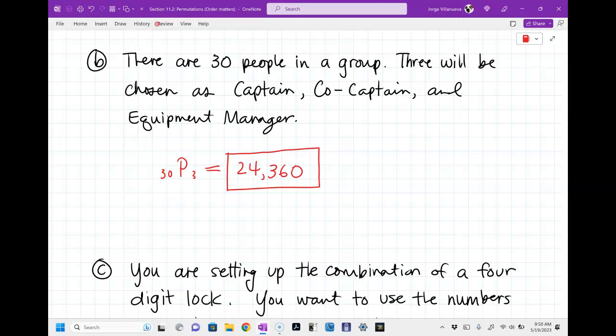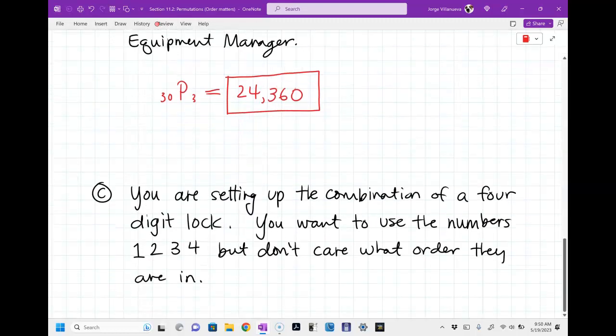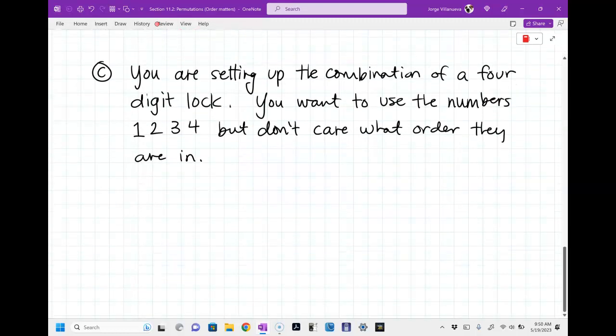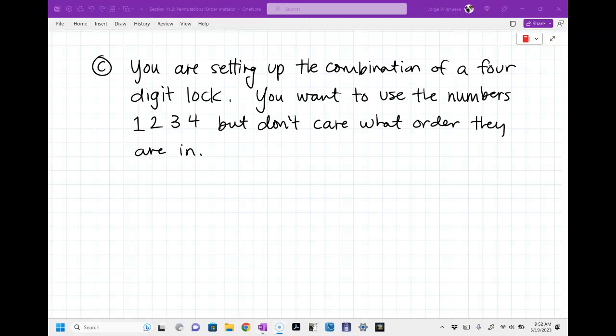Part C is, it's a little different. I mean, you could use the permutation button, but this one's a little different because it tricks people. So let me give you a little bit of time to write this one down. Alright. So this one is from your homework, by the way. So you're setting up the combination of a four digit lock. You want to use the numbers one, two, three, and four. You got to use them all. But you don't care what order they're in. In other words, you can put four first, one first, three first, two first. It doesn't matter as long as you use all the numbers.